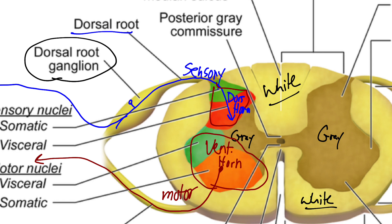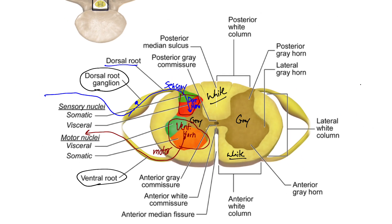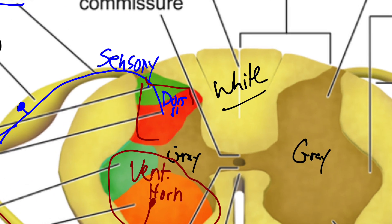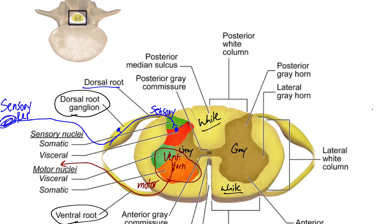The dorsal root ganglion is just where the cell bodies of those neurons happen to live, because these are unipolar neurons — they're really just wires. These neurons start out in some sort of sensory receptor, so imagine a touch receptor in your skin. It's going to send a signal down its axon, zip through the dorsal root, into the dorsal horn. And in that space, since the dorsal horn is gray matter, you're going to find a synapse. This would be the axon terminal of the first neuron, and this is where you're going to find the cell body of the second neuron.